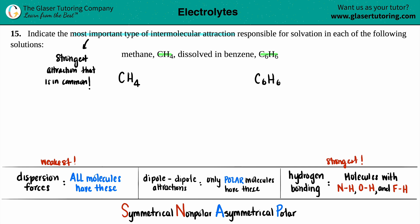But what does CH4 have and what does benzene have? To answer this question, we always think in terms of Lewis structures. If I draw the Lewis structures for CH4 and C6H6, we can categorize what type of compound this is using SNAP: symmetrical nonpolar, asymmetrical polar.